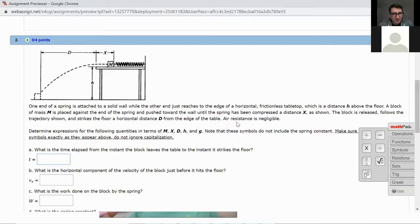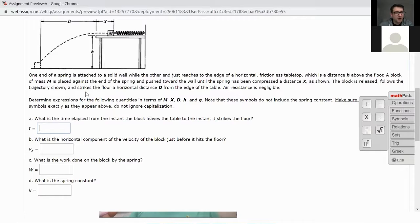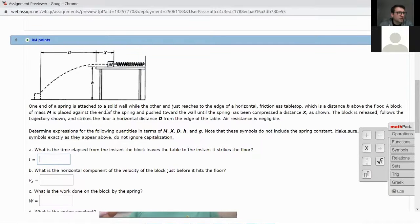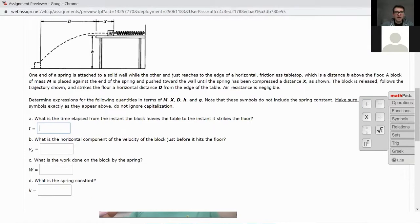Basically we have this setup with a spring up here on a table. We know how far it goes - distance D. So the first thing is how much time has elapsed from the instant the block leaves the table to the time it strikes the ground. Just remember that's just a kinematic equation, that's just the John equation.